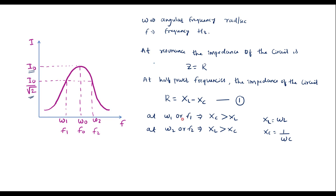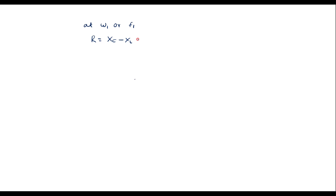At ω1, since XC is greater than XL, equation 1 can be written as R = XC − XL, which is 1/(ω1·C) − ω1·L. Or I can rearrange this as −R = ω1·L − 1/(ω1·C). Let me call this equation 2.